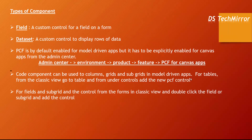Code components can be used on columns, grids, and subgrids in Model-Driven Apps. For tables from the classic view, go to Tables and under Controls add the new PCF control. I have mentioned that for columns you use the field type, and for grids you use the dataset type. How to enable them and add them into your apps we will see separately during the hands-on sessions. We will cover this from the very basics, so no need to worry at this point.